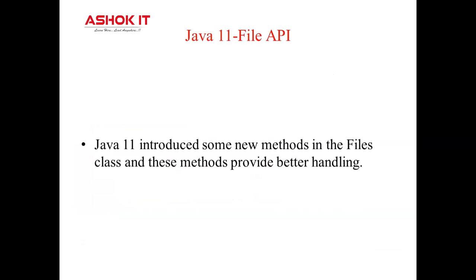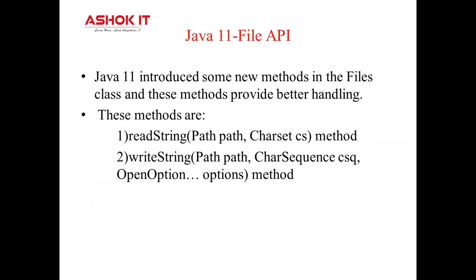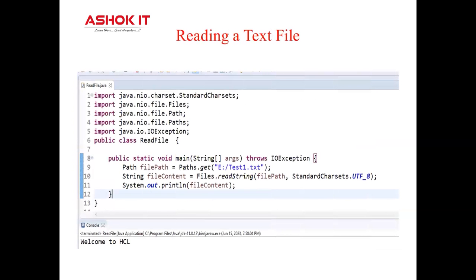Java 11 File API features: Java 11 introduced new methods in the Files class for better file handling. The readString method accepts two parameters: path and character set. It is used to read the content from a file into a string using a specified character set, and it exists in the java.nio.file.Files class. In the example, with the help of the get method we are reading content from the text1.txt file, passing the file path and UTF-8 as the character set to readString.